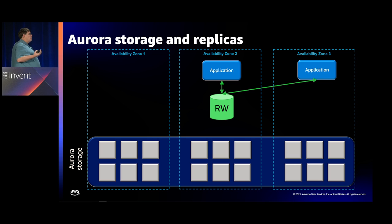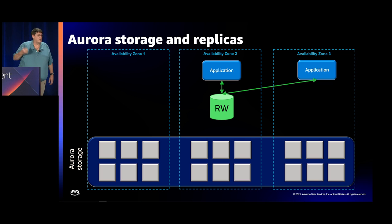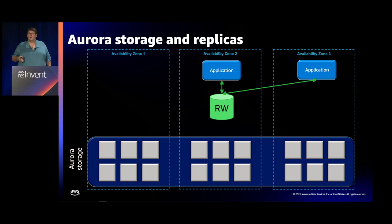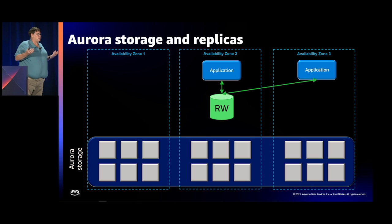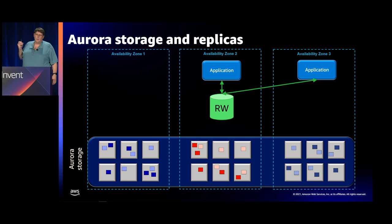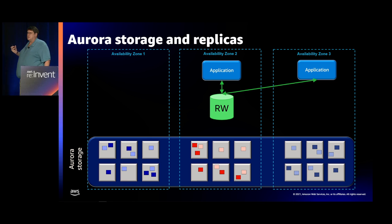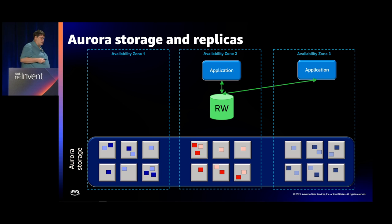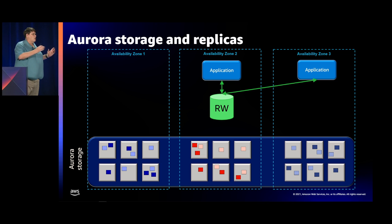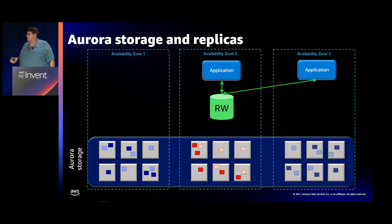In a typical single-AZ deployment of Aurora, you'd have a single instance of either Postgres or MySQL as your writer node. It gets a quorum connection to your Aurora storage, opens it for read-write intent, and your applications can connect up and query the storage. Your storage is in 10-gigabyte blocks spread out across the three availability zones — not meant to say all storage is in one AZ, but that we spread it out for reliability and scalability.